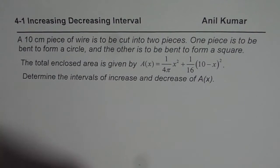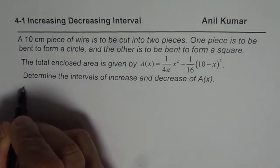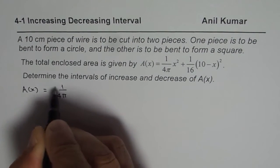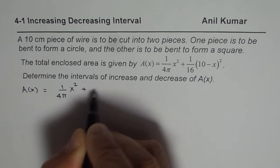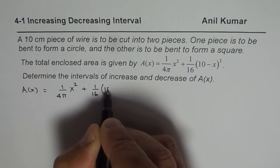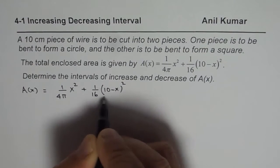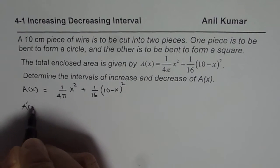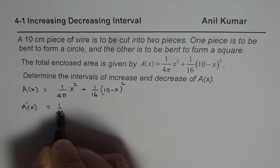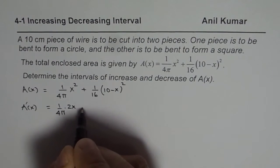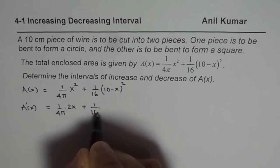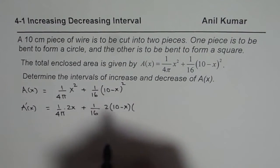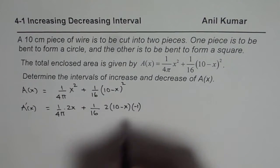To find intervals of increasing and decreasing, we need to find the derivative of the function. The function given to us is (1/4π)x² plus (1/16)(10 − x)². So the derivative A′(x) equals (1/4π)·2x plus (1/16)·2(10 − x)·(−1), using the chain rule on the second term.